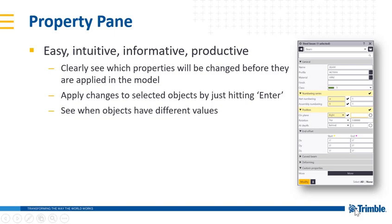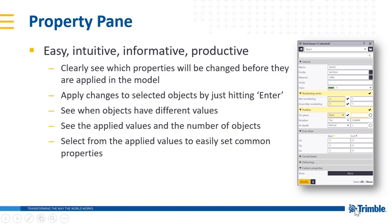When you've got multiple objects selected, you can see those different values, and you can also see the values that are applied to those objects, and select from those values to easily set common properties. When the property pane is open, if you select a new object, it automatically gets those object properties — it's kind of like an instant inquire, in that you can immediately see the properties of the object you've just selected.